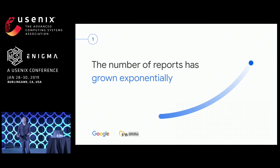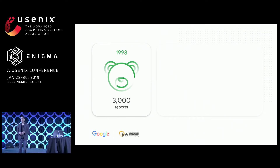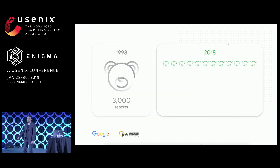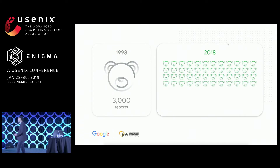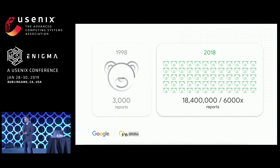Let's delve into the challenges we are facing today. The first one is that the number of reports has grown exponentially over the last two decades. In 1998, when NCMEC started to process those reports, they received about 3,000 reports. Fast forward to 2018, NCMEC has received over 18 million reports. That is a chilling 6,000x increase of content. This onslaught of reports has created a lot of strain on the whole ecosystem and the ability to process those reports quickly and rescue kids as fast as possible.